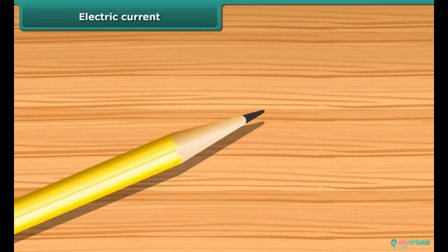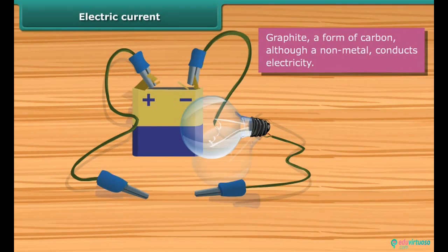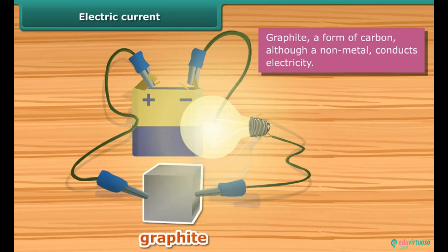Pencil lead is made of graphite. It is a form of carbon. It is non-metal but it is a conductor of electricity. It can be tested whether a given material is a conductor of electricity or not by placing the given material between the free ends of wires in an electric circuit. Bring the free ends of the two wires close. Now let them touch each other. If the bulb glows, the material is electrically conducting. Otherwise it is an insulator.